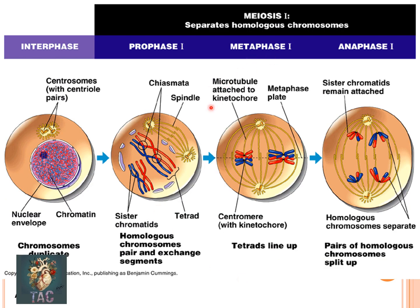In meiosis one, you can see the centrioles dividing into two and moving to opposite poles. The homologous chromosomes pair and exchange genetic material, forming chiasmata. In metaphase, the tetrads arrange themselves at the equatorial plate, and the pair of homologous chromosomes separates in anaphase to the opposite pole.